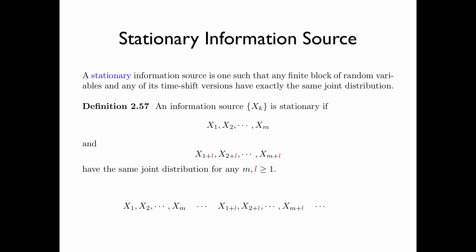Here is an illustration. Consider the information source x sub k. Here x1, x2, up to xm is a block of m random variables. By shifting the time index by l, we obtain the block of random variables x1 plus l, x2 plus l, all the way to xm plus l. If the information source is stationary, then these two blocks of m random variables have exactly the same joint distribution.